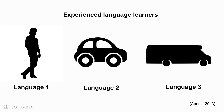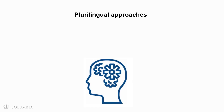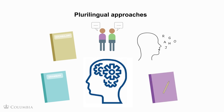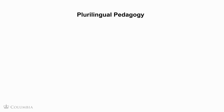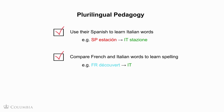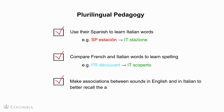Plurilingual speakers, therefore, can take advantage of their previous experiences and knowledge by making transfers of linguistic features, concepts, and strategies while learning a new language. In language teaching and learning, so-called plurilingual approaches allow learners to employ these transfers more effectively, and to use their prior linguistic knowledge to learn grammar, vocabulary, pragmatics, pronunciation, and orthography in the target language more quickly. In other words, a plurilingual pedagogy may encourage learners to use their Spanish to learn Italian words, as in Spanish 'estación' and Italian 'stazione', or to compare French and Italian words to learn spelling, as in French 'découverte' and Italian 'scoperto', or make associations between sounds in English and sounds in Italian to better recall the appropriate pronunciation.